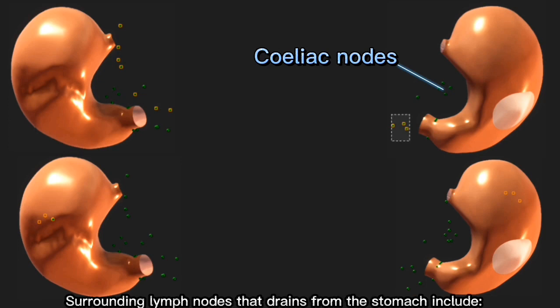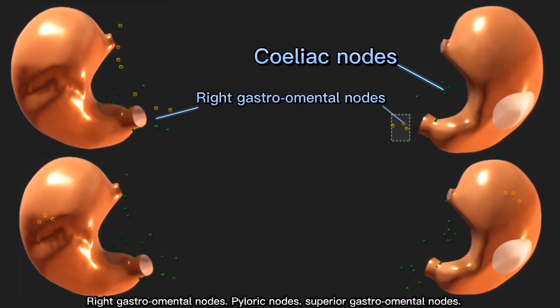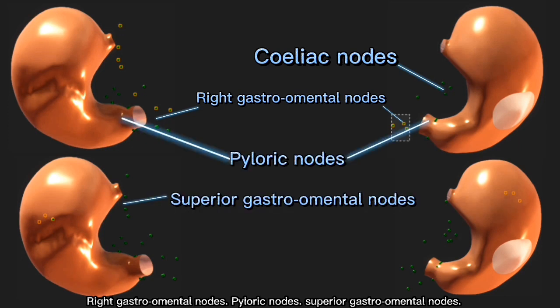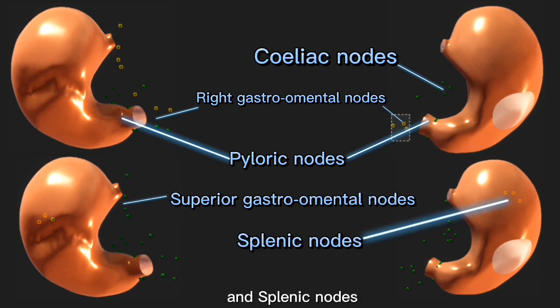Surrounding lymph nodes that drain from the stomach include right gastro-omental nodes, pyloric nodes, superior gastro-omental nodes, and splenic nodes.